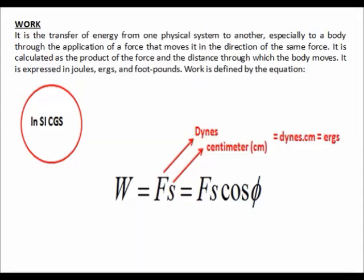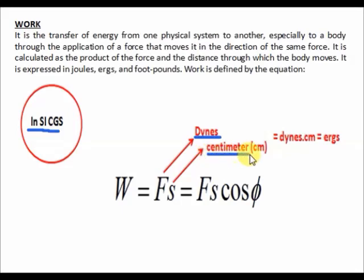Now let us derive the units for work in CGS units. The unit for force F should be in dynes, and the distance S should be in centimeters, denoted as small letter cm. Dynes multiplied by centimeter is equivalent to ergs.